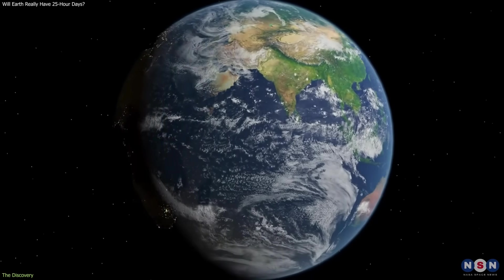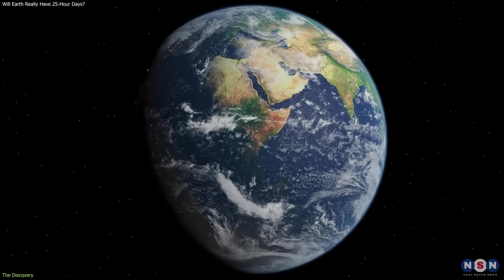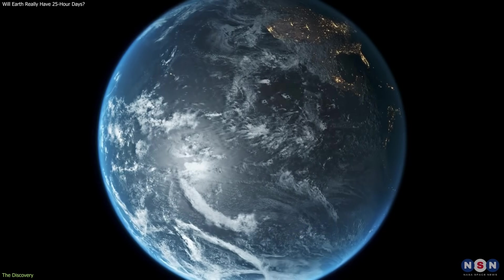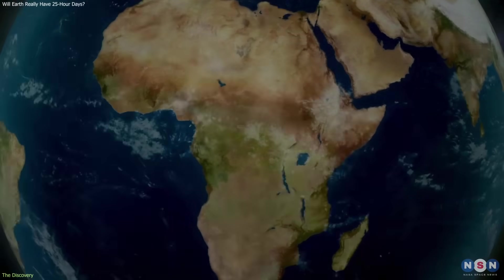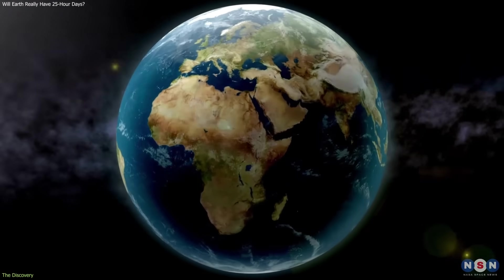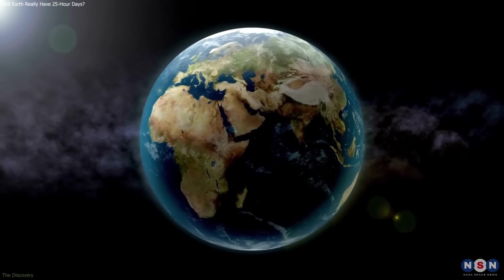The discovery here is not that Earth is suddenly slowing faster than expected, but that we can now see how multiple systems—climate, oceans, and the solid Earth—contribute to subtle changes in the planet's spin.